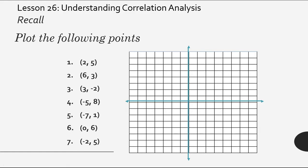Where will the point (2, 5) fall? Very good, there. Next, (6, 3). Very good. How about (3, negative 2)? There it goes down.